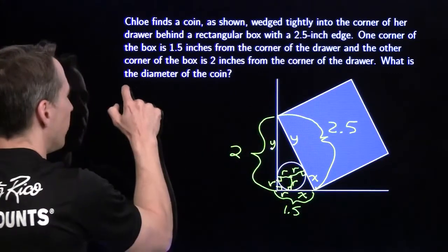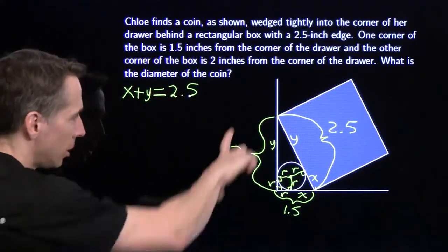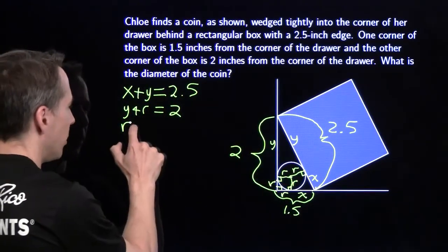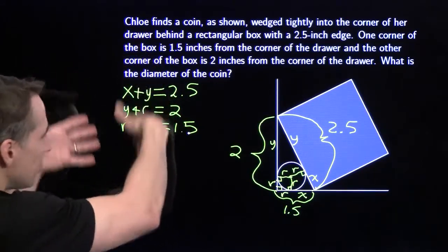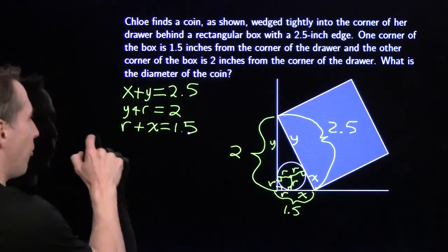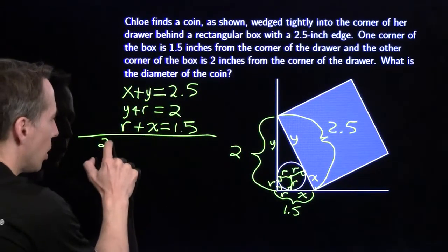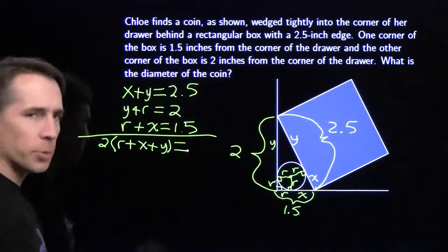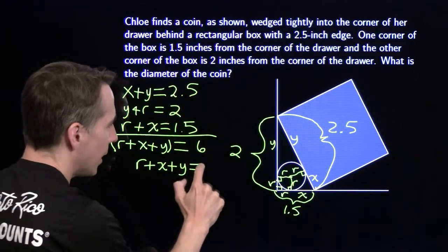x plus y is 2.5. And then y plus r is 2. And then r plus x is 1.5. These are really pretty equations. That's a nice pretty symmetry going on over here on the left. We have every combination of two of the three variables. When I see equations like this, I'm awfully tempted to just add all three of them up. We add all three of these, we get two x's, two y's, two r's over here. So I have 2 times the sum of r plus x plus y, and that equals the sum of these three over here, which is 6. Divide by 2, and we see that the sum of r plus x plus y is 3.